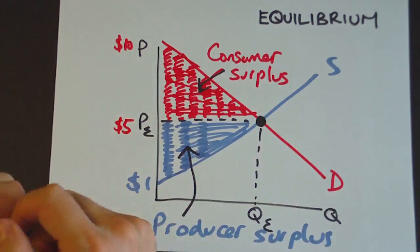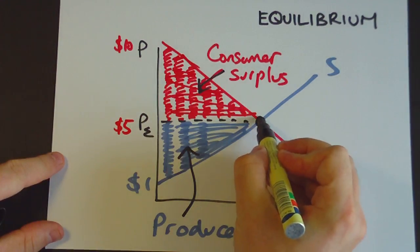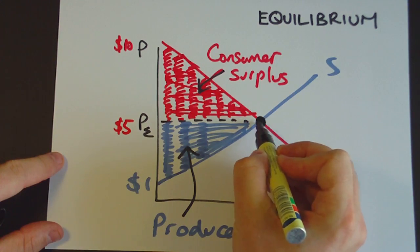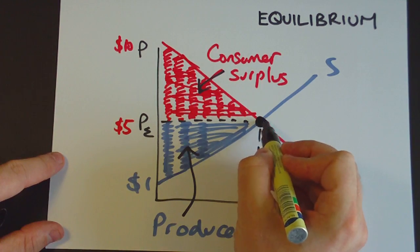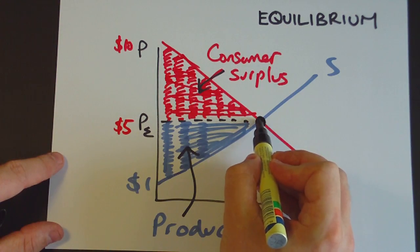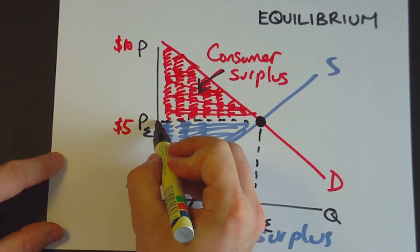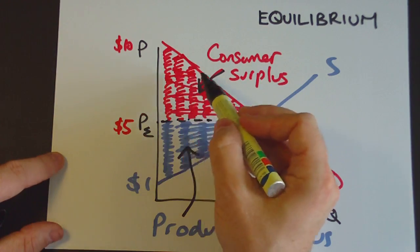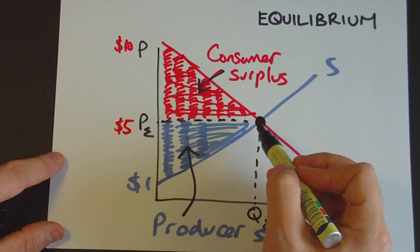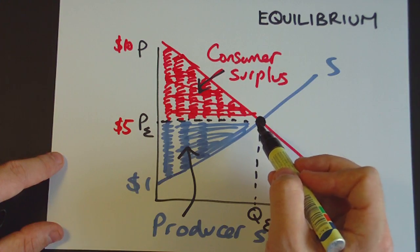Okay, so we've got consumer surplus. Remember the way to work this out effectively is you just work out the price at which the equilibrium point at which the market's actually going to operate. Draw a line horizontally across to the vertical axis and basically anything between the demand curve and that horizontal line is going to be consumer surplus.